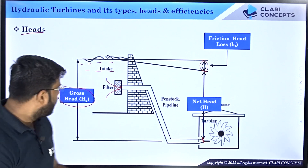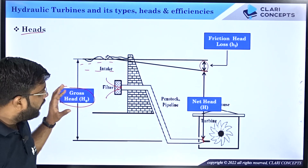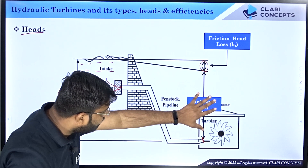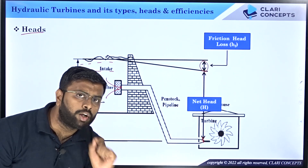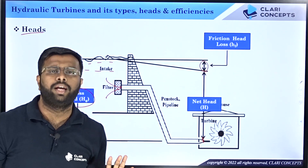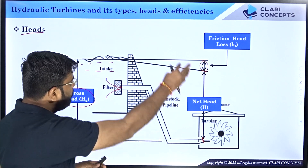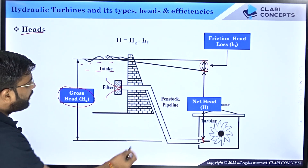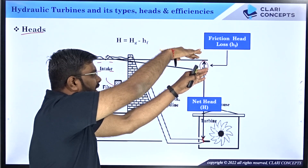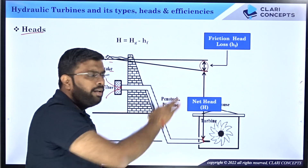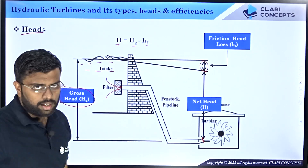So there are three heads: gross head, which is the total head available in your reservoir; net head, which is the head at turbine entry — the head available when water reaches the turbine; and friction head loss HF. So we can say that net head H equals gross head HG minus friction head loss HF.